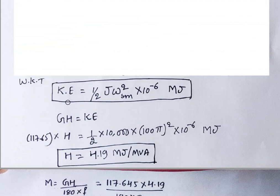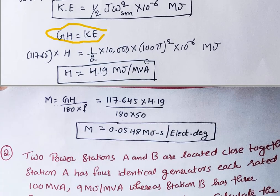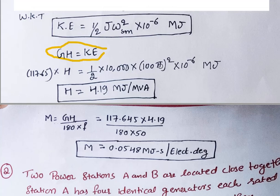From the derivation of the inertia constant, kinetic energy = ½ J ω_s² × 10⁻⁶ mega joules. We also know that kinetic energy equals G·H. In this equation all values are known except H. Applying G = 117.65 MVA, we solve for H and get H = 4.19 megajoules per MVA.